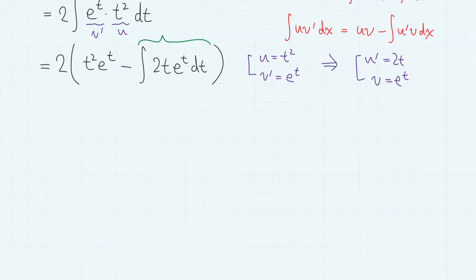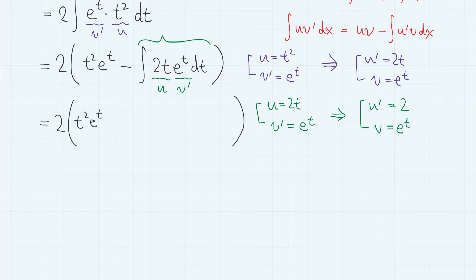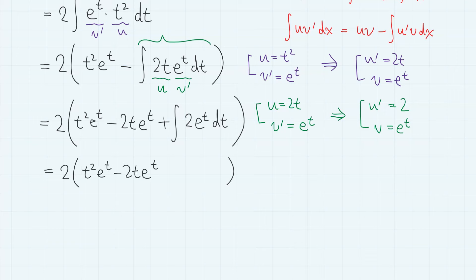For this part, we use integration by parts again, now with u as 2t and v prime as e to the power of t. Then u prime equals 2 and v equals e to the power of t. So we have minus uv — which is 2t e to the power of t — plus the integral of u prime v, which is 2 e to the power of t dt. This gives 2t squared e to the power of t minus 2t e to the power of t plus 2 e to the power of t plus constant c, which we write as 2 times (t squared minus 2t plus 2) times e to the power of t plus c.